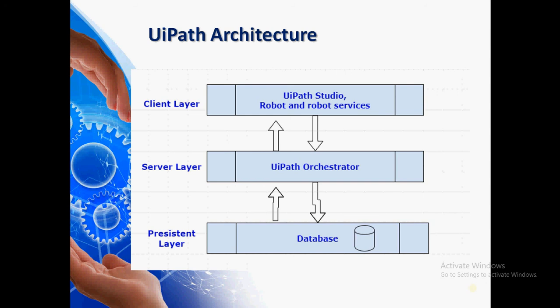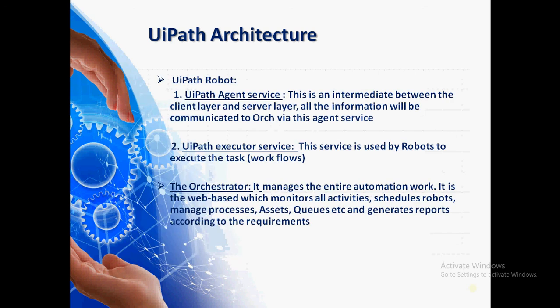The next layer is the server layer, which is the middle layer towards the server side. For example, UiPath Orchestrator fits in the server layer. When you want to get into the orchestrator for configuration, you log in via the orchestrator URL. In that server layer, the complete orchestrator design resides — it manages the entire automation work, monitors all activities, schedules robots, manages processes, lets you create assets and queues, and generates reports.